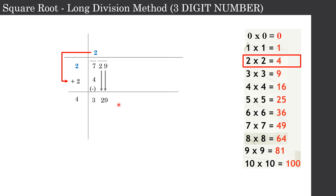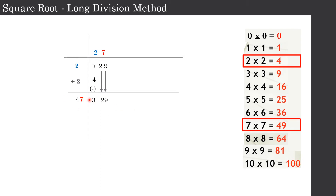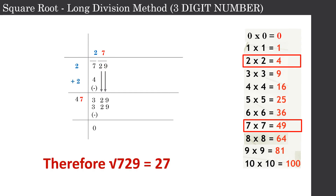Since the unit place is 9, it can be obtained by 3 × 3 or 7 × 7. So I can try either 43 × 3 or 47 × 7. I try 47 × 7, which gives 329. Subtracting: 329 − 329 = 0. Therefore, the square root of 729 is 27.